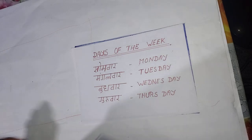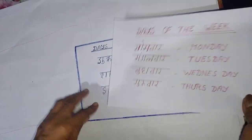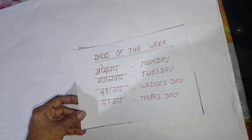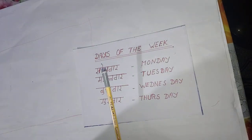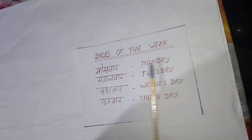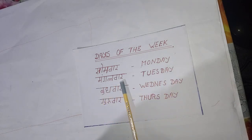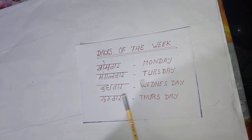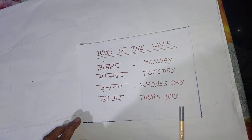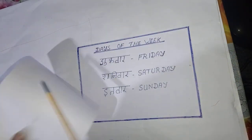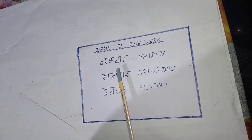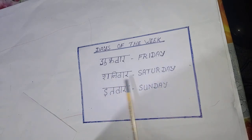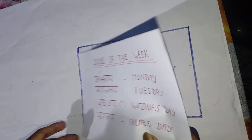Now let us pass on to days of the week. How many days are there in a week? Seven days are there in a week. Som war, Monday. Mangal war, Tuesday. Buddu war, Wednesday. Guru war, Thursday. Shukra war, Friday. Shani war, Saturday. Eath war, Sunday.